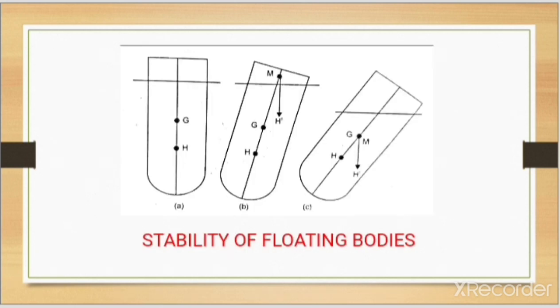In figure C, the metacenter M lies below G. Hence the force on the body turns the body further. So the body will not return to its equilibrium position. This type of equilibrium is called unstable equilibrium.